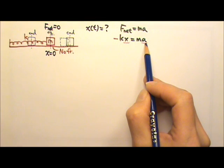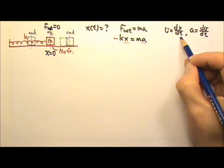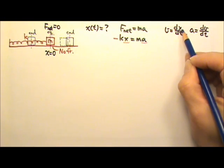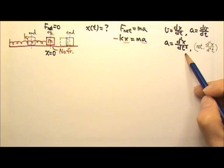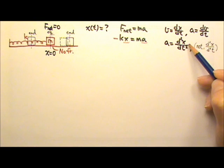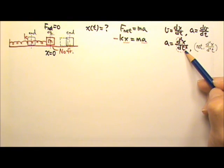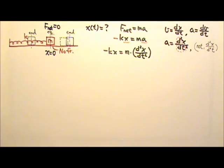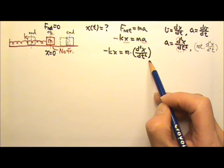How are x and a related? We know that the time derivative of position gives velocity, and the time derivative of velocity is acceleration. So if we take the time derivative of x twice, we get a. This is how we write the second or double derivative — we write the squared notation here. So we substitute a with the second derivative of x, giving us this equation. It is not a normal algebraic equation; it has a derivative in it.